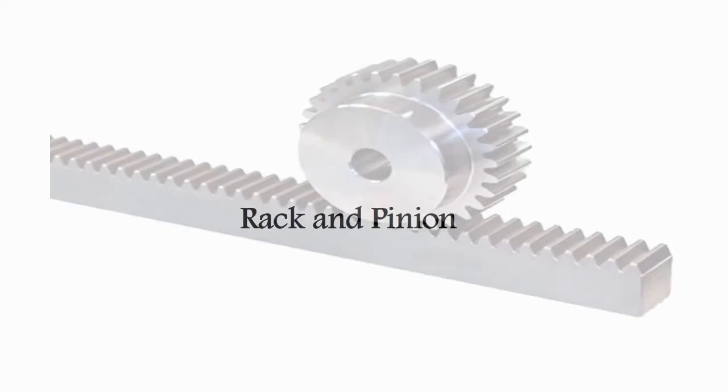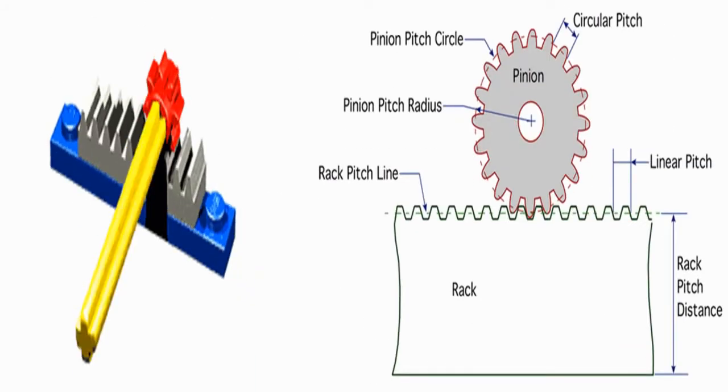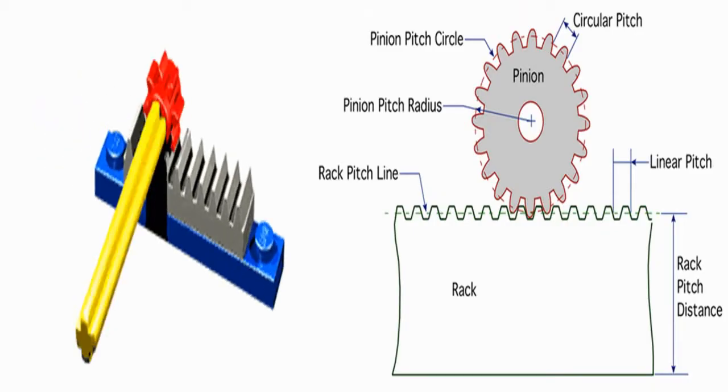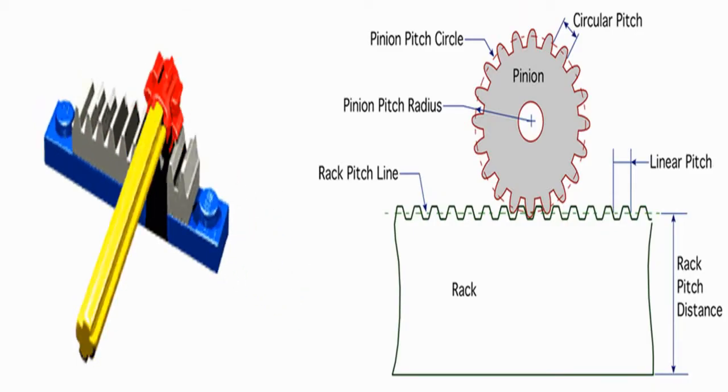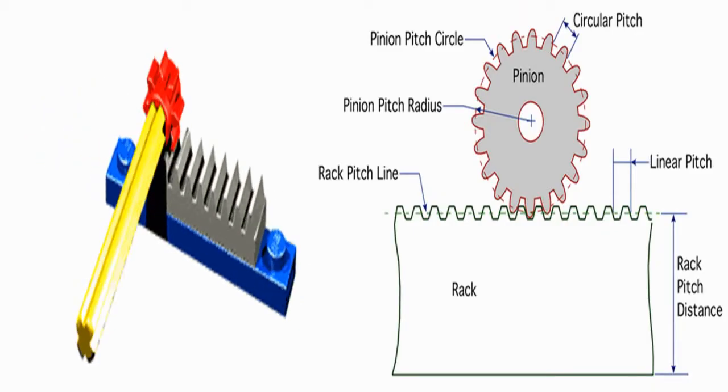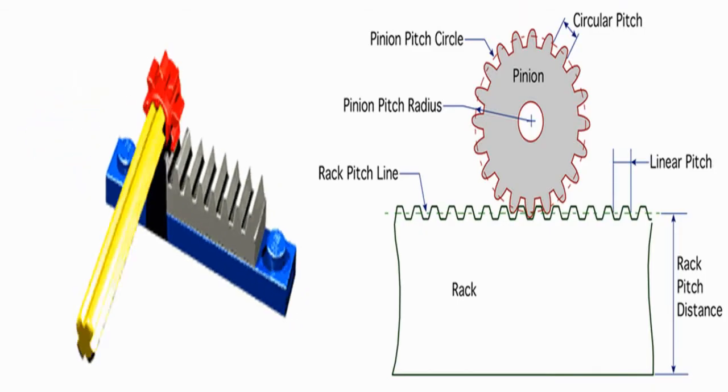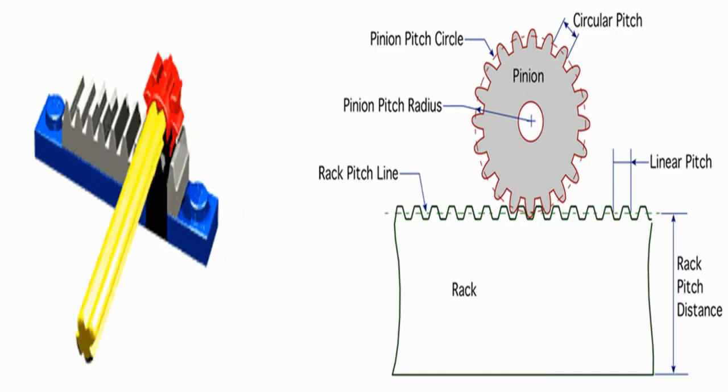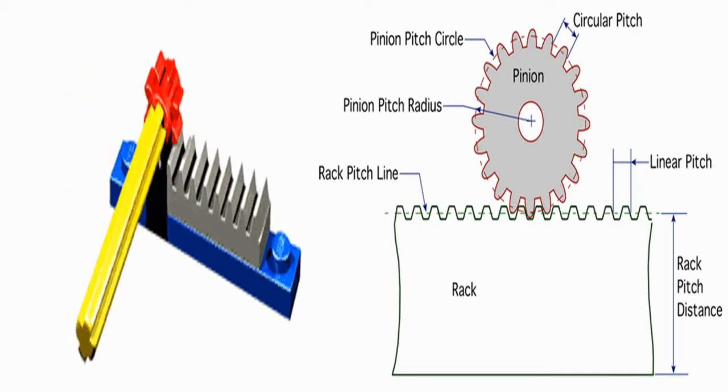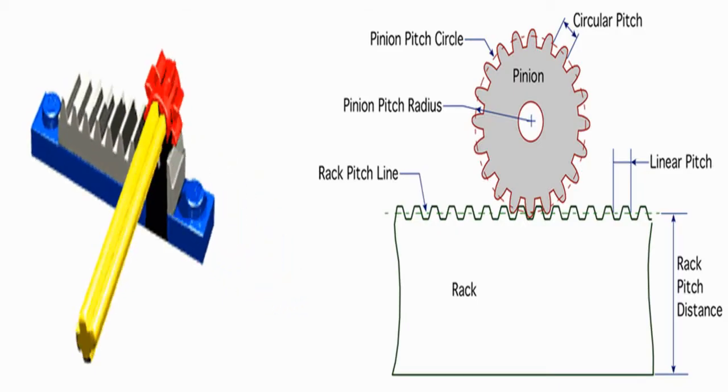Number three: rack and pinion. A rack and pinion is a type of linear actuator that comprises a circular gear, the pinion, engaging a linear gear, the rack, which operate to translate rotational motion into linear motion. Driving the pinion into rotation causes the rack to be driven linearly. Driving the rack linearly will cause the pinion to be driven into rotation.